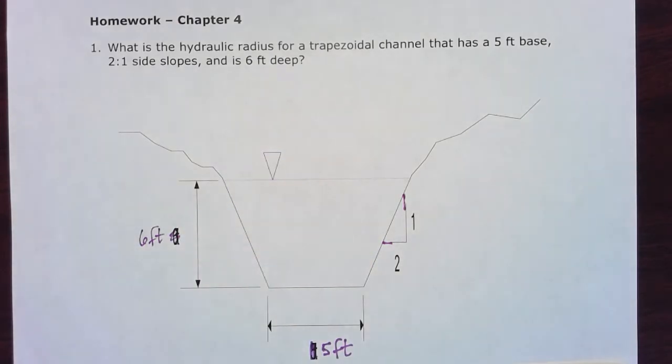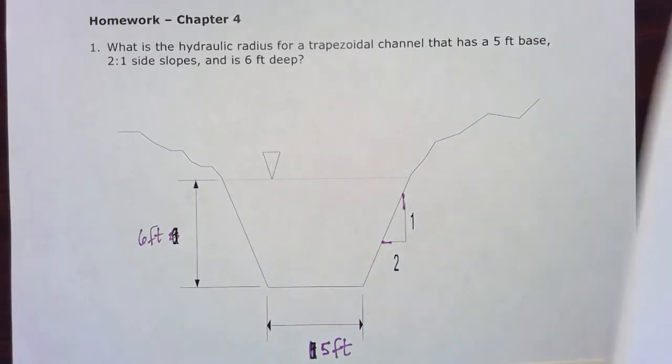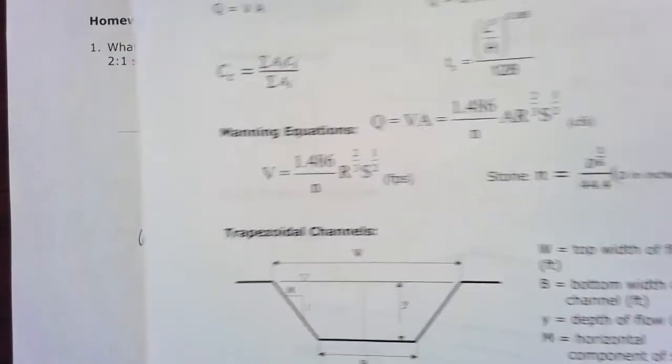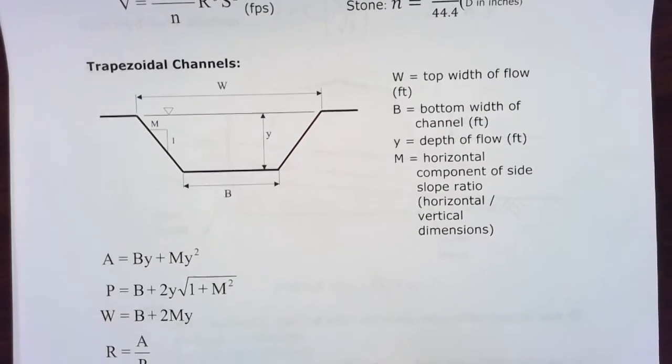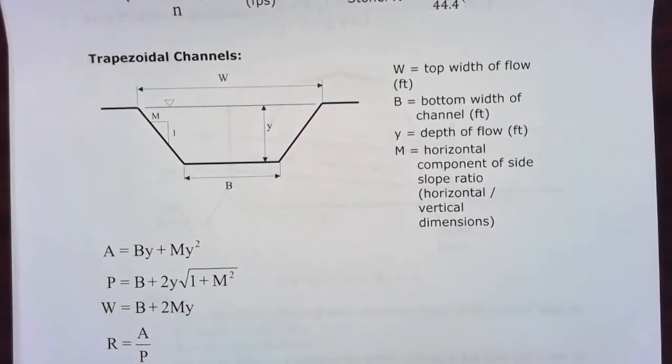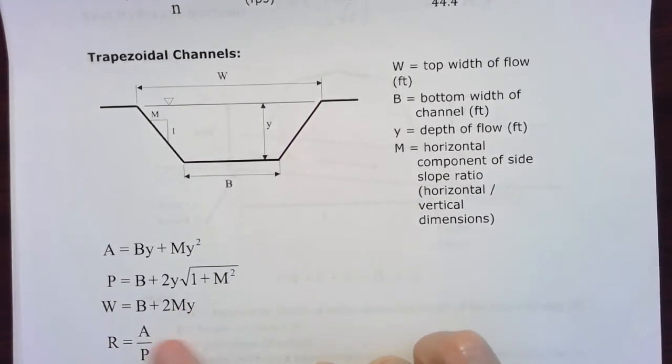Remembering what we know about trapezoidal channels and the formulas we derived based on similar triangles and Pythagorean theorem, we can label our channel with different variables and then use those to derive equations for area, wetted perimeter, the top width of the channel if we need it, and the hydraulic radius. This time we're looking for hydraulic radius, so we're gonna want to find the area and the wetted perimeter.